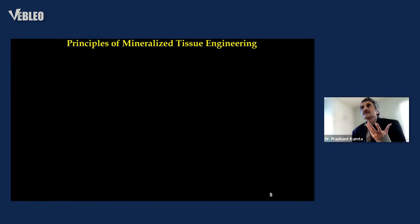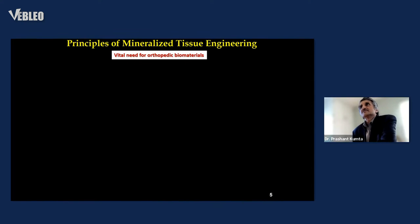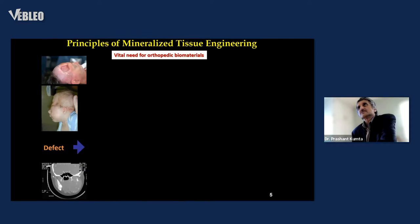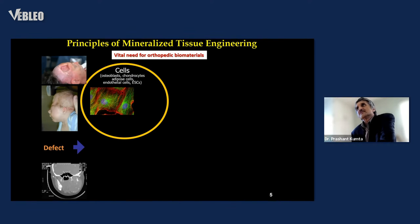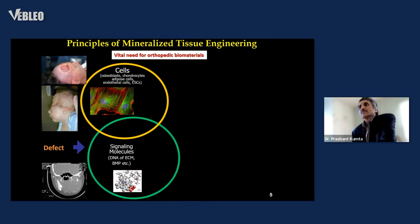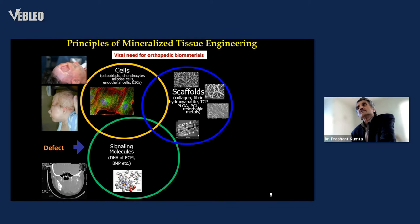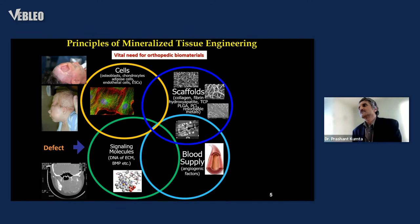Mineralized tissue engineering is one way of addressing this, and it has become extremely popular since the mid-90s when it was introduced. The concept of tissue engineering is: if you have a defect, the way to fix it is to combine it with the appropriate cell — whether osteoblasts, chondrocytes, endothelial cells, or stem cells — combined with signaling molecules such as growth factors, DNA, or extracellular matrices, and a resorbable scaffold typically made from polymers and ceramics. Now we have degradable metals as well.